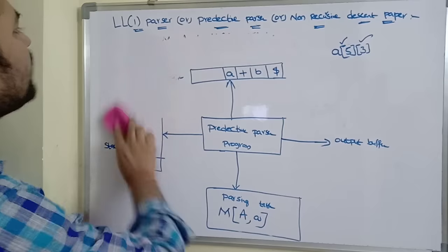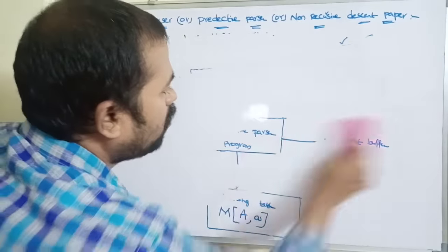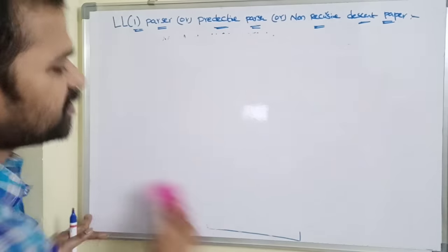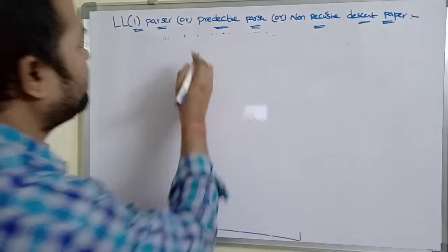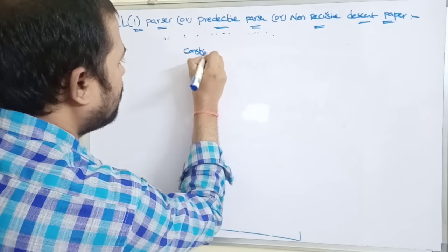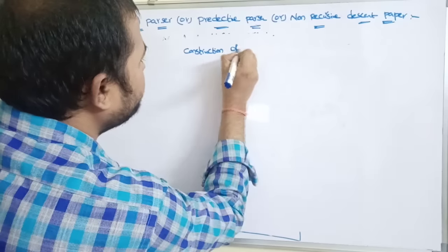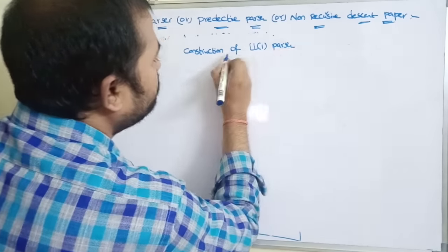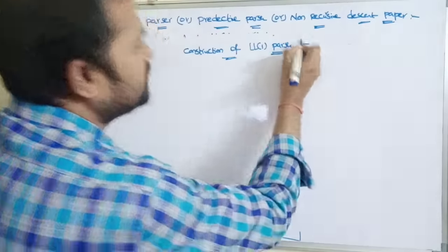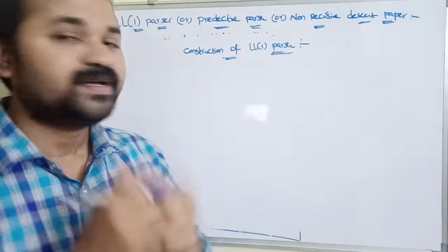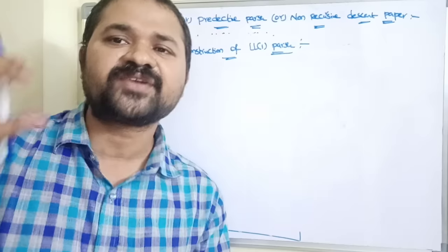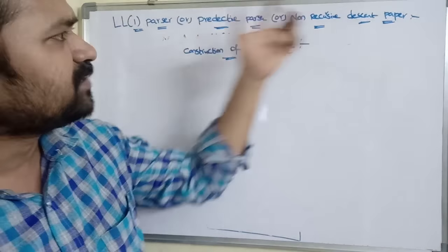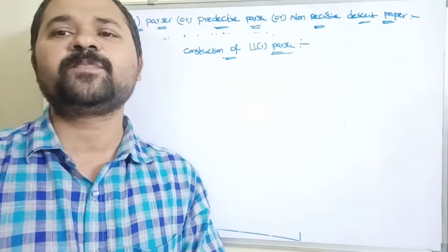Now let us see how to construct an LL(1) parser. LL(1) parser can also be called as predictive parser or non-recursive descent parser — non-recursive means recursive function calls are not used. We can construct an LL(1) parser with the help of five steps.